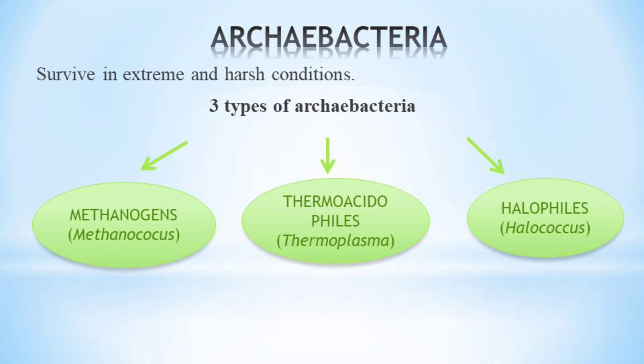Archaebacteria are further divided into three types: Methanogens, Thermoacidophiles, and Halophiles. Methanogens are found in places deprived of oxygen, such as marshes and swamps — for example, Methanococcus. Thermoacidophiles are found in hot and acidic environments such as hot springs with low pH — for example, Thermoplasma.